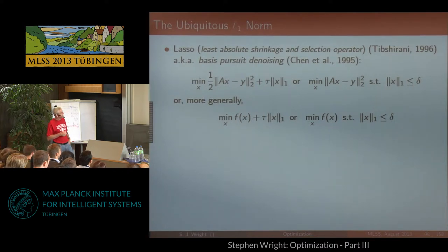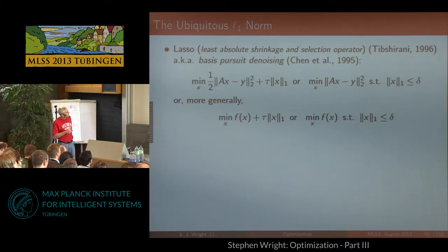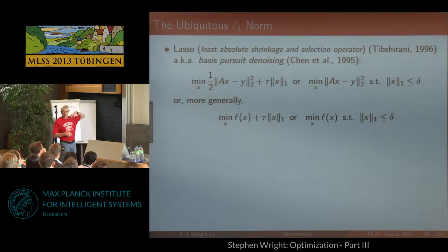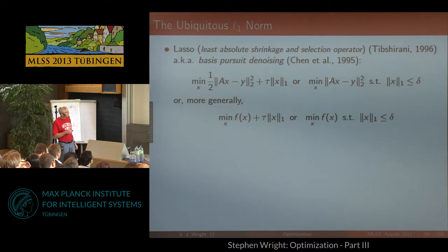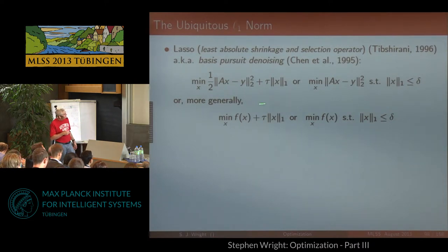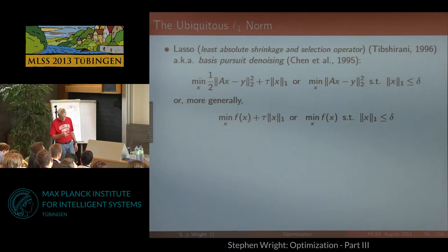The classical thing that Tibshirani did in 1996 or 1997 was he took a linear regression problem and added on this L1 term. The way he stated it was as a constraint on L1, and he tried playing with delta. He observed that the bigger you made delta, the more non-zeros crept into the solution x, and ultimately when delta was very large you just got the least squares solution. He was mostly interested in the over-determined case, but in compressed sensing the matrix is under-determined.